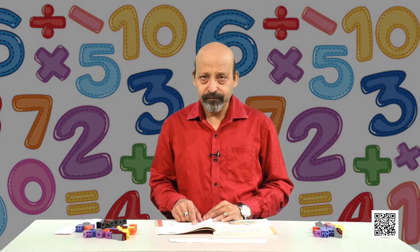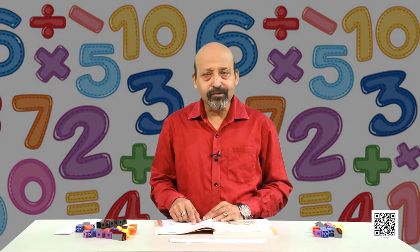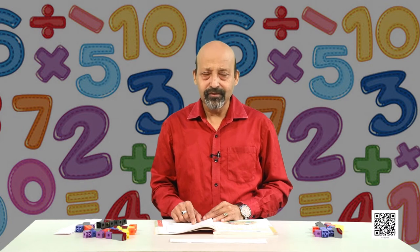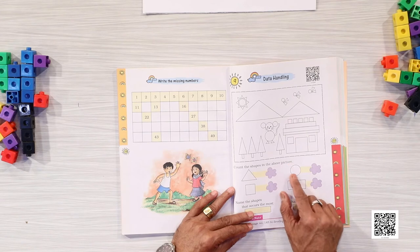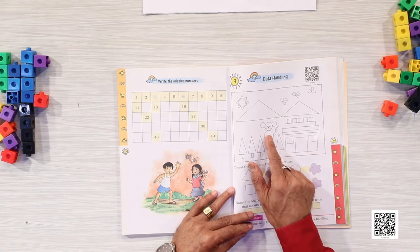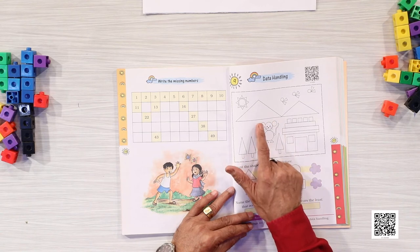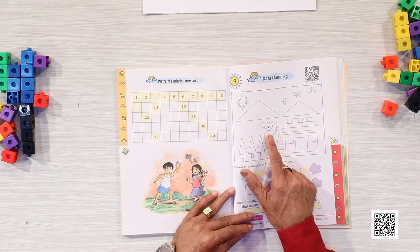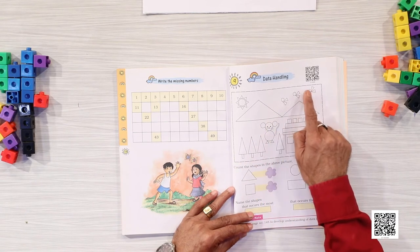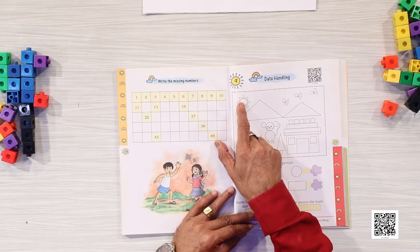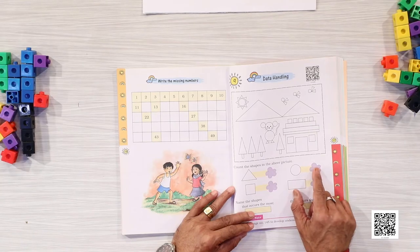Do you know how to write 22? In the last chapter you studied: 22 is 20 and 2, it has 2 tens and 2 ones, so it is written as 22. Very good. Let us now count the round shapes — how many such shapes are there? Round number 1, 2, 3, 4. Then the face of the cat: 1, 2, 3, 4. Then this is 5, this is 6, this is 7. Is that all? No, one more round shape is here, so total round shapes are 8. We will write 8 here.